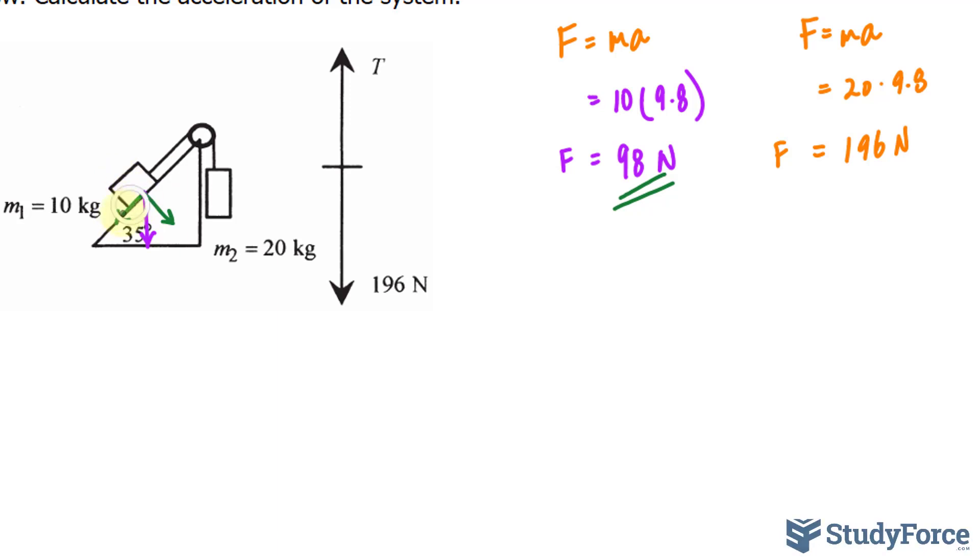Say I want to find out the force of this vector. I'll recreate these vectors over here so that you can see them clearly. So again, we have 35 degrees. We have a mass and a force directly down due to gravity.